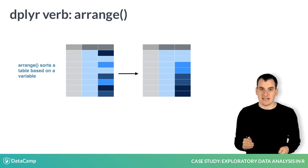Arrange sorts a dataset based on one of its variables, in either ascending or descending order. This is useful for pulling a few interesting conclusions out of your data.